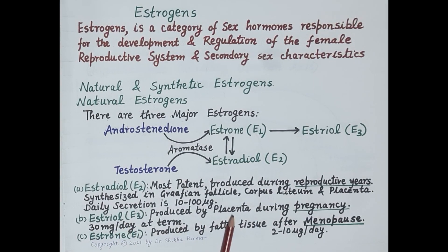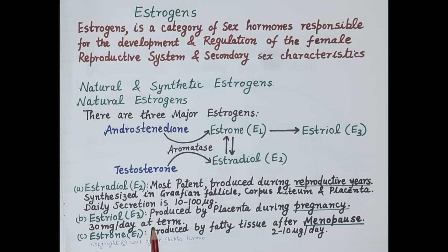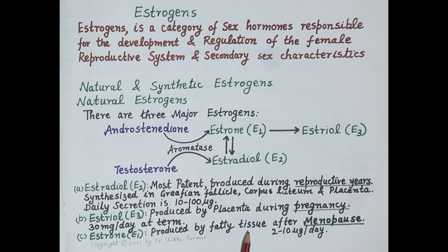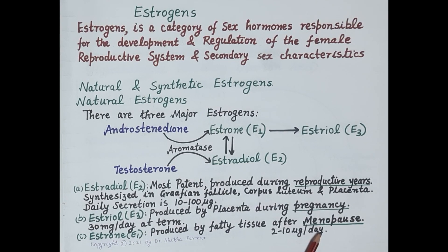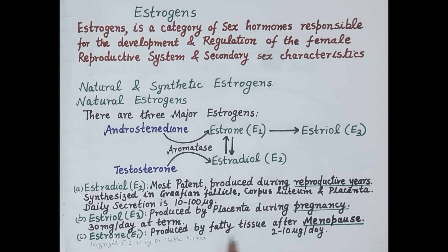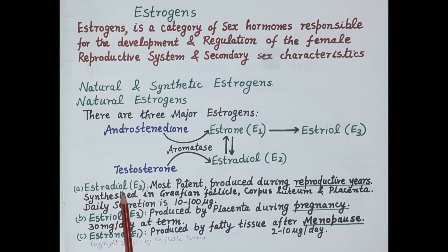Estradiol is rapidly oxidized in the liver to estrone, and estrone is hydroxylated to estriol. Estriol is primarily produced by the placenta during pregnancy; the levels of estriol rise to as high as 30 milligrams per day at term. Estrone is produced by fatty tissues after menopause, and estrone is the primary estrogen in the postmenopausal woman, with a daily secretion of 2 to 10 micrograms per day.